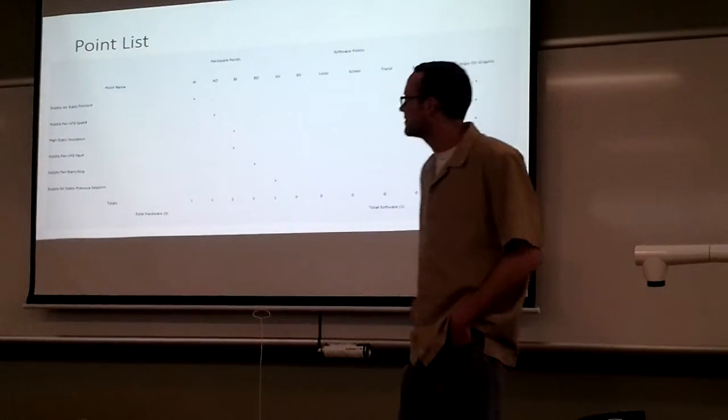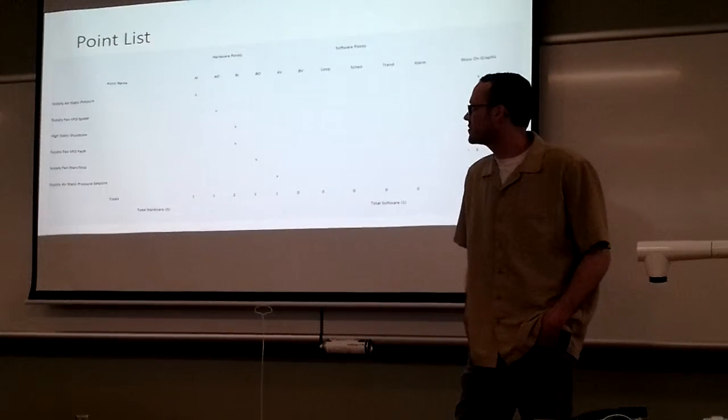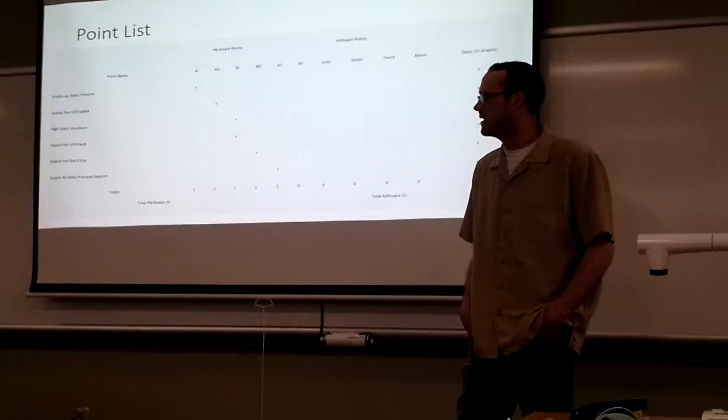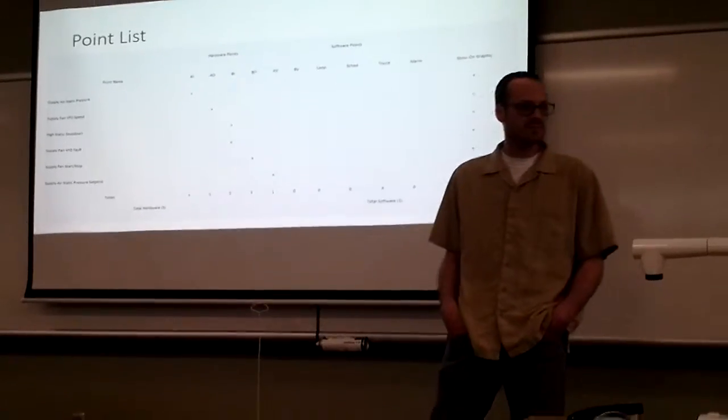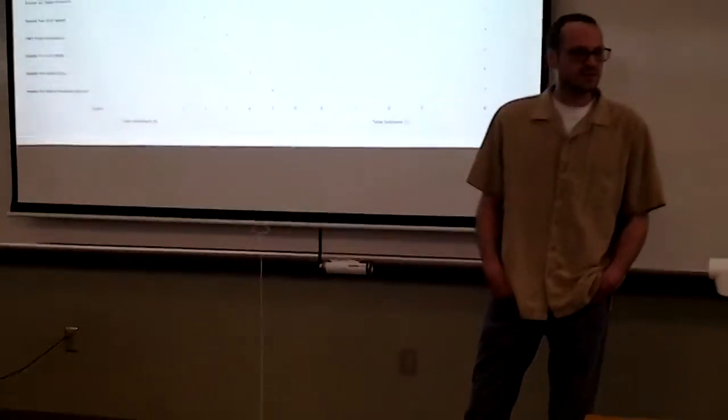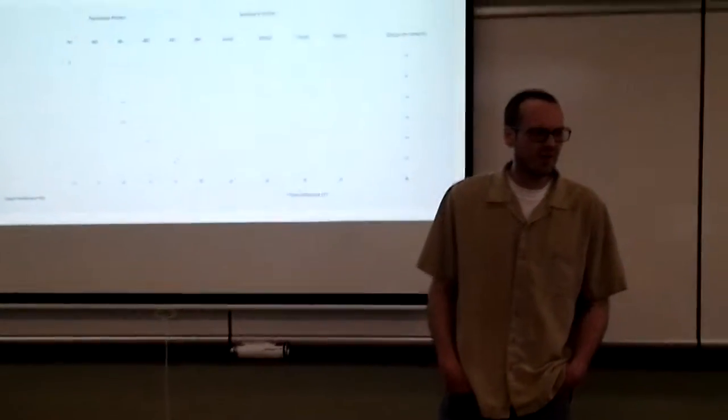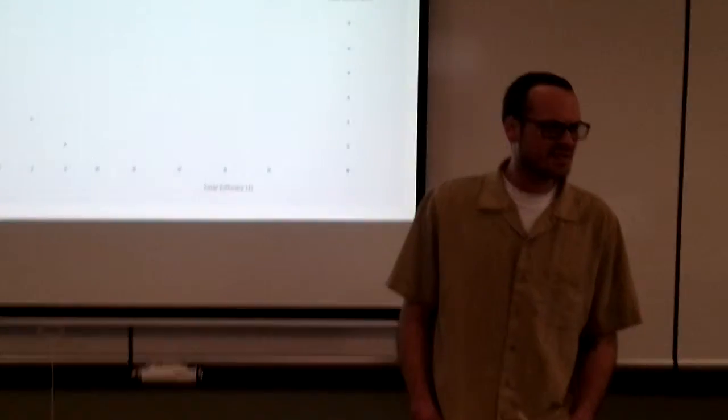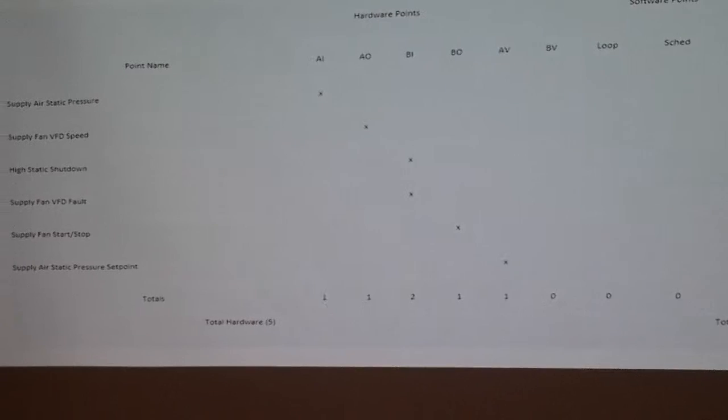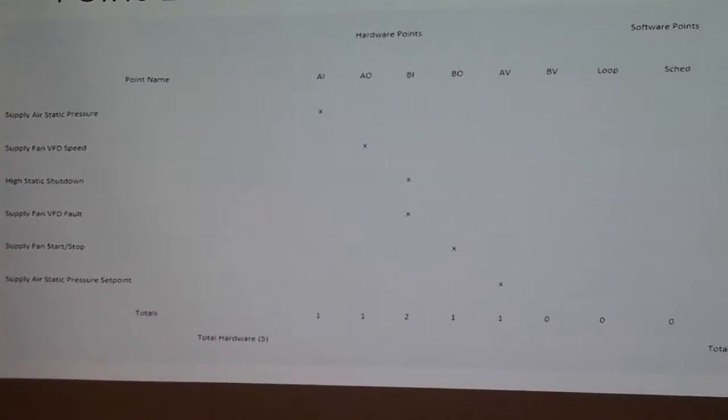Our points list, we have static air pressure and that's an analog input. We have a supply fan speed VFD, that's our analog output. We have a high static shutdown which is a binary input. We have a supply fan VFD fault and that's another binary input.